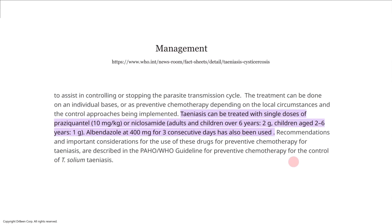Management of taeniasis per WHO: taeniasis can be treated with a single dose of praziquantel 10 mg/kg, or niclosamide — 2 g for adults and children over 6 years, 1 g for children aged 2 to 6 years. Albendazole at 400 mg for 3 consecutive days has also been used. Treatment can be individual or as preventive chemotherapy depending on local circumstances.